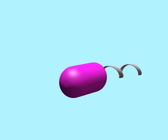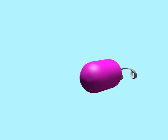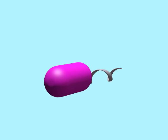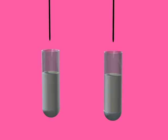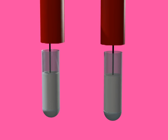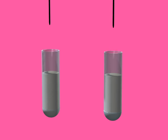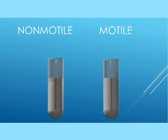Some bacteria are motile given their possession of flagella, which allow them to move. If bacteria from a sample are stabbed into a semi-solid agar — an agar which is less concentrated than usual, say 4% agar as opposed to 1.5% — motile bacteria will be able to move through the agar, and the area will appear cloudy or turbid as they spread.